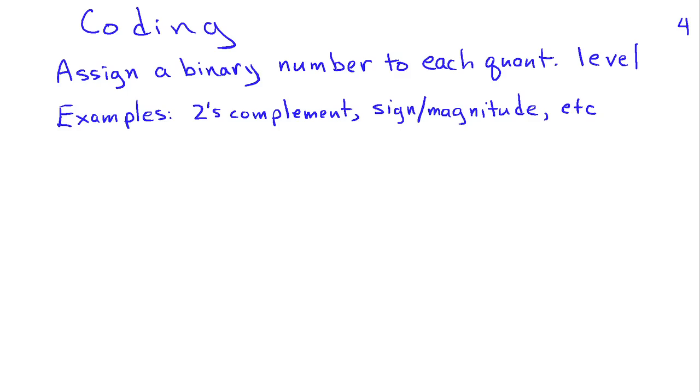So let's turn our attention now to coding. We've got these different quantized values of the signal, and we have to assign a binary number to those. If you take computer engineering, there's lots of different binary representations, and ones that might be used could be such as 2's complement, sine magnitude, and so on.